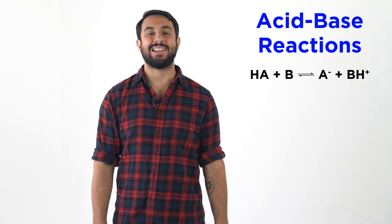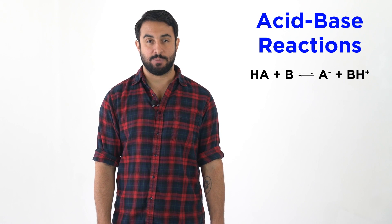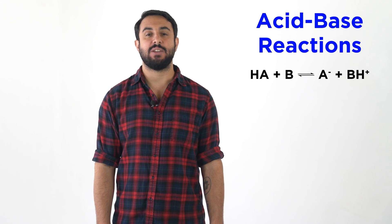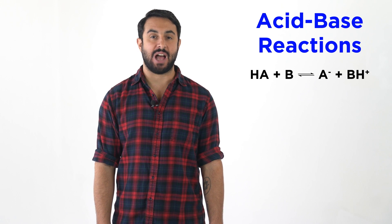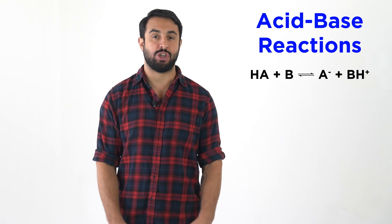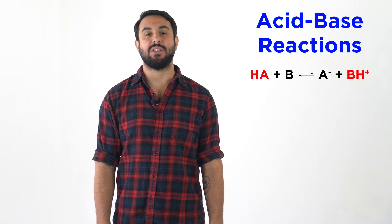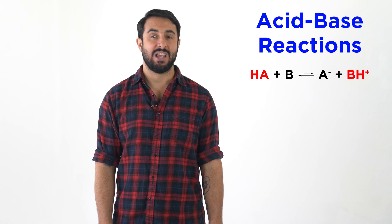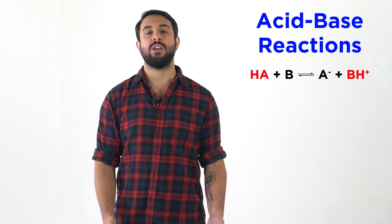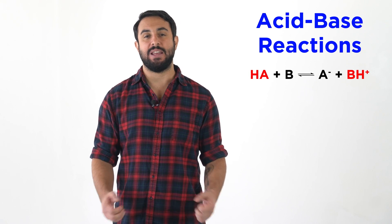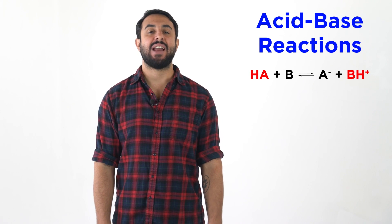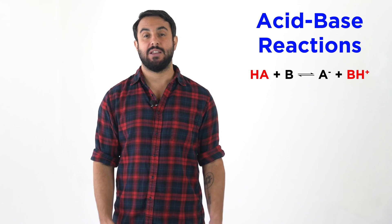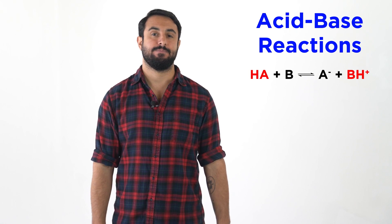So if we are looking at an acid-base equilibrium and we want to know which side of the equilibrium dominates the solution, we simply identify the less acidic of the two acids, which will be the one with the higher pKa, and that is the side that will dominate. Professor Dave for Chegg, see you next time!